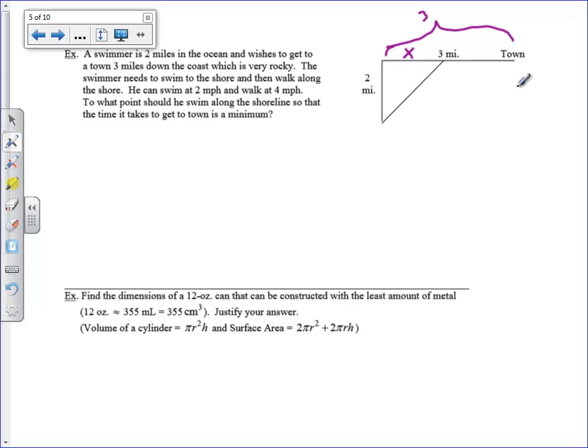Alright, and so the question says, the swimmer needs to swim to the shore and then walk along the shore. He can swim at two miles per hour and walk at four miles per hour. To what point should he swim along the shoreline so that the time it takes to get to the town is a minimum? So I am looking for this x distance that's going to be somewhere between zero and three, for him to swim to the shore so that he can reach town in the minimum amount of time. So I'm going to label everything else on my picture in terms of x. This last part of that line would be three minus x. And then I've got a right triangle so I can use the Pythagorean theorem. And I can label my hypotenuse as the square root of x squared plus four.